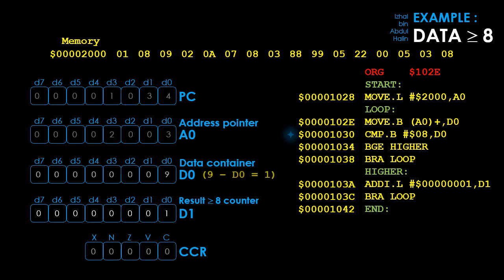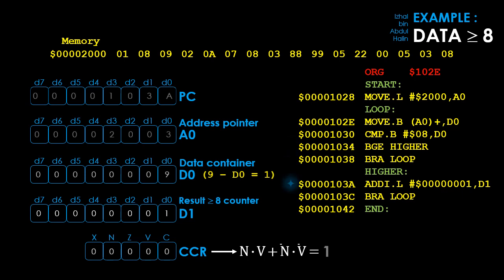This causes the status register to be updated to 00000, because the result is a non-zero positive number. The program counter is pointing to address 1034 and is updated to the next instruction's address. The BGE higher instruction is executed — the condition codes for BGE are evaluated and the result is again 1. Thus a branch to label higher is done by updating the program counter with the address of label higher, 103A. The add instruction at 103A is executed: D1 is incremented by 1, its value is now 2, signifying that 2 bytes of data have a value equal to or greater than 8.